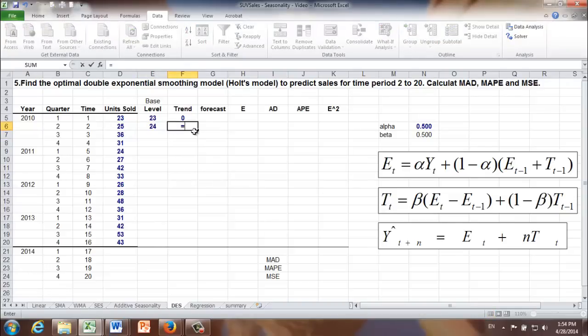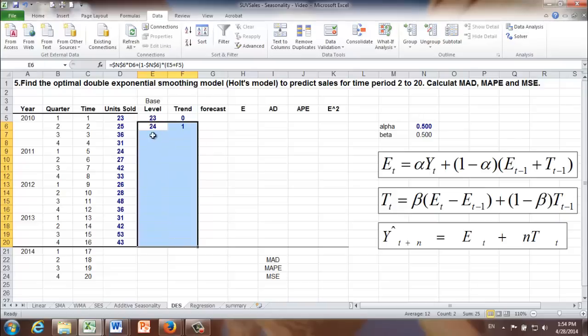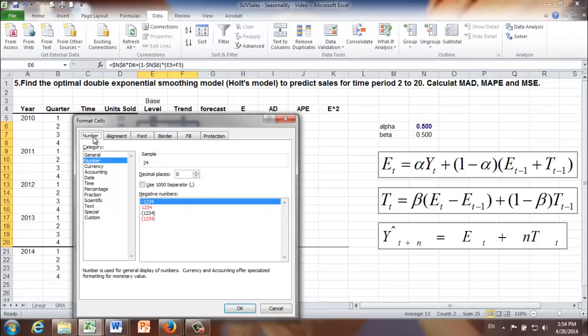To calculate the trend, let's use the second formula. The trend of time period 2 or T2 is going to be equal to beta absolute cell reference times E2 minus E1, plus 1 minus beta times T sub T minus 1. Here we are looking for the trend from time period 1. Let's make sure those numbers are integer. We keep zero decimal places.